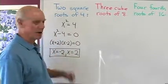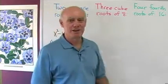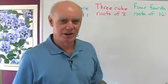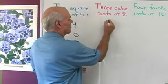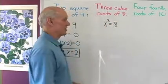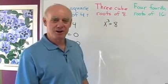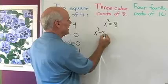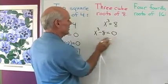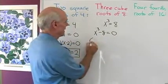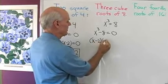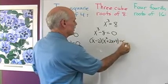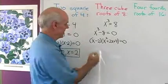That's going to be an easy factoring problem. How about the three cube roots of 8? I know one of them is 2, because 2 to the third power gives me 8. I can find all of the cube roots of 8 by solving x cubed equals 8. In standard form, x cubed minus 8 equals 0. That's the difference of two cubes, so I factor it as x minus 2 times x squared plus 2x plus 4 equals 0. Setting the first factor equal to 0 gives x equals 2.